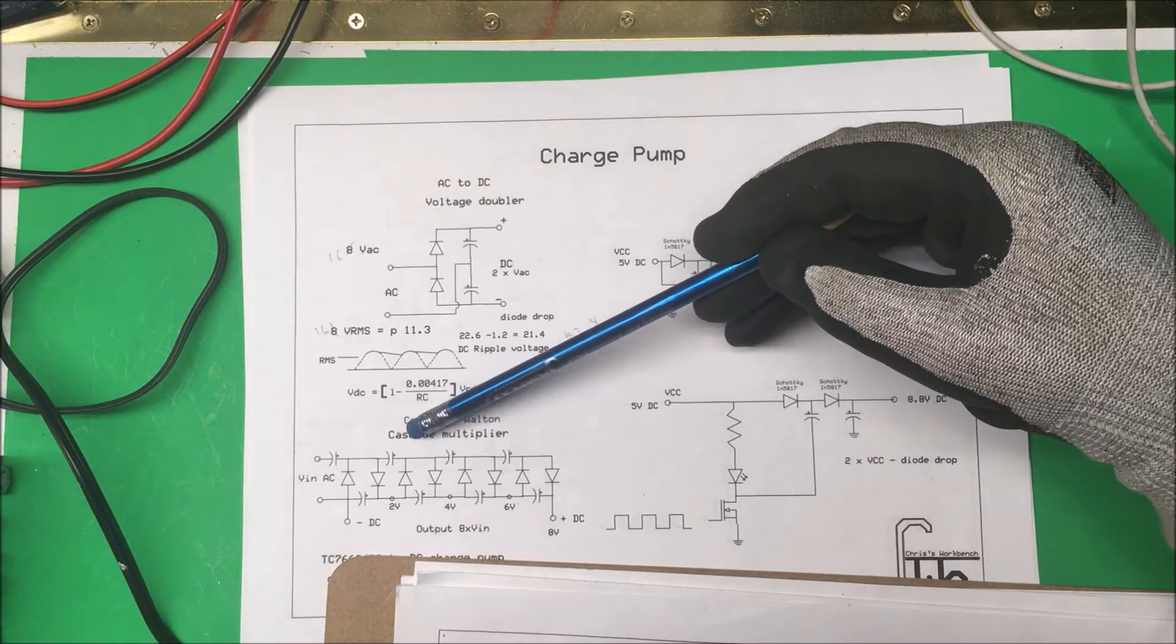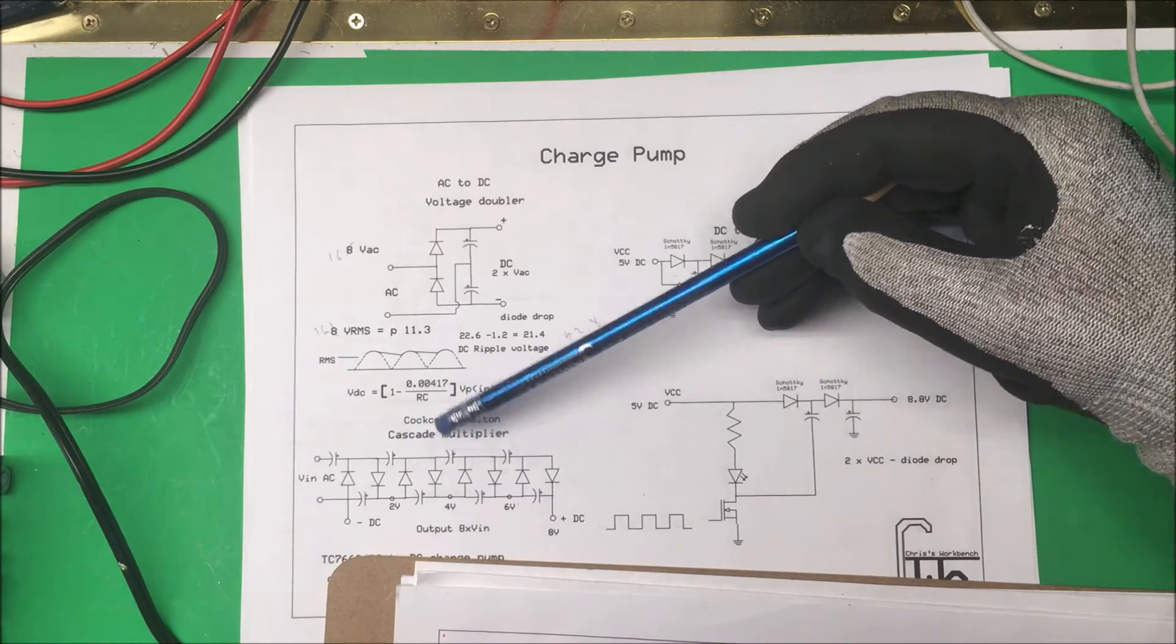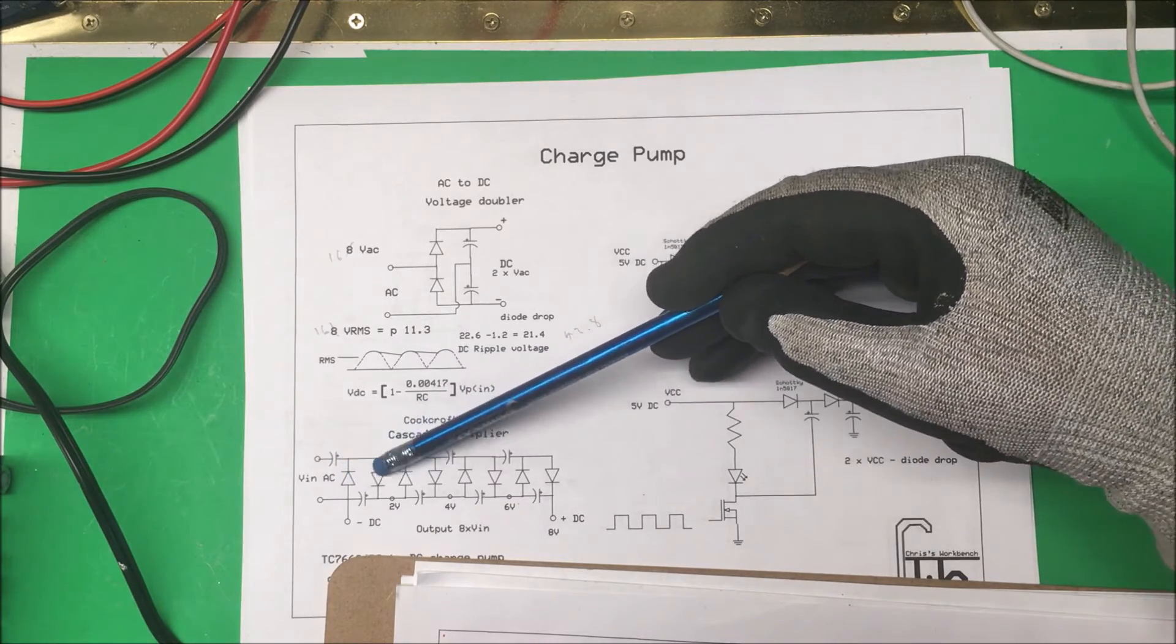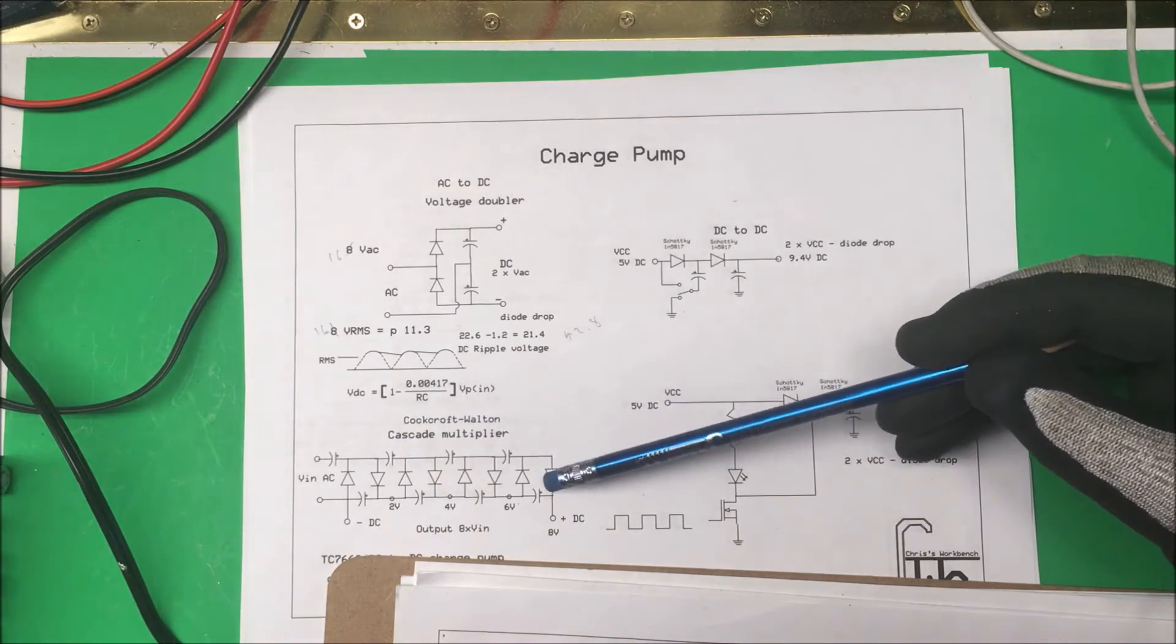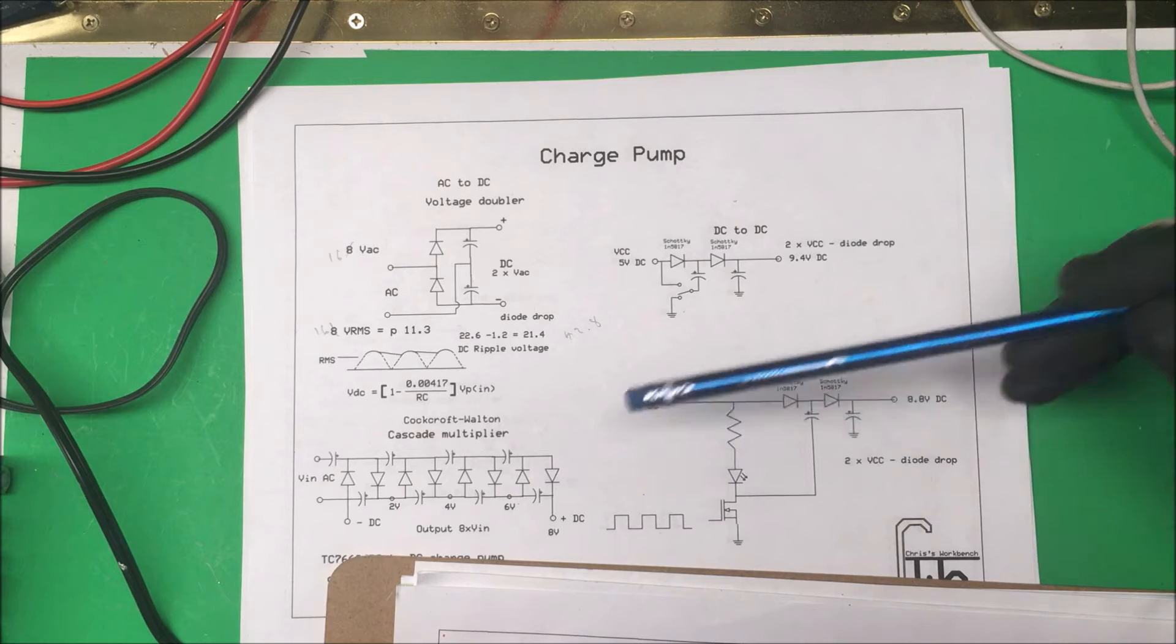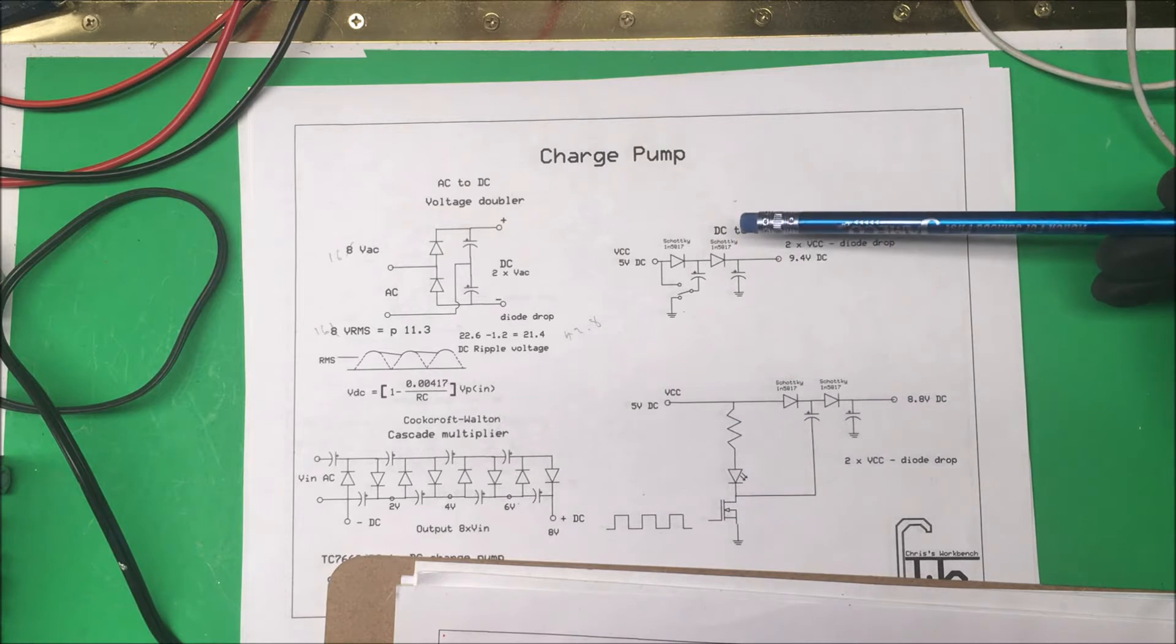You can also use this cascade multiplier. Same thing, we just keep adding these together and you can keep multiplying the voltage up and get very high voltage out of that.